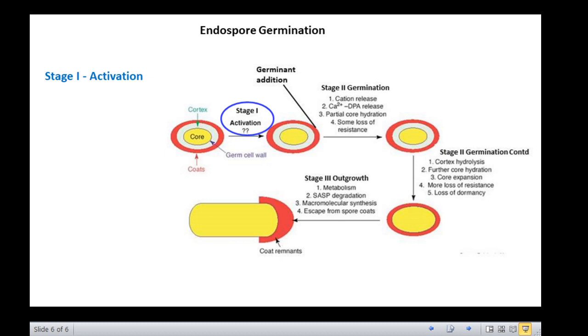Sublethal heat, that is, temperature lower than that required to kill endospores but high enough to kill vegetative cells, is efficient in bringing about activation. Certain chemical agents such as reducing agents can also cause activation. The precise events in the activation step are not known.